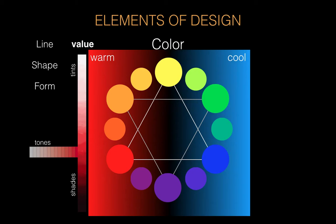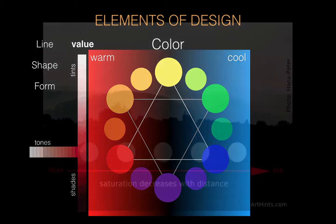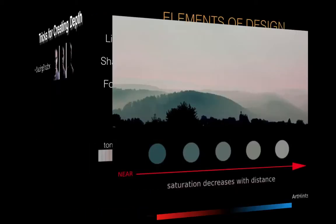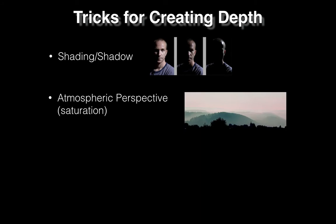This leads us to another way of creating depth. It turns out that if you look out into the distance, things that are less saturated — because they have mixed with clouds in between you and that object — tend to look farther away. This is what's referred to as atmospheric perspective: you get a sense of atmospheric depth because of the saturation of the object, with desaturated objects looking farther away.